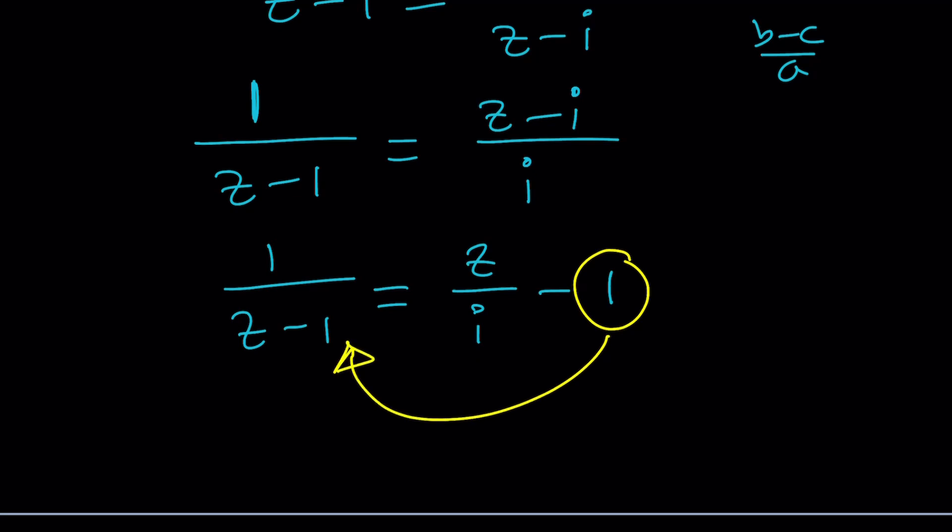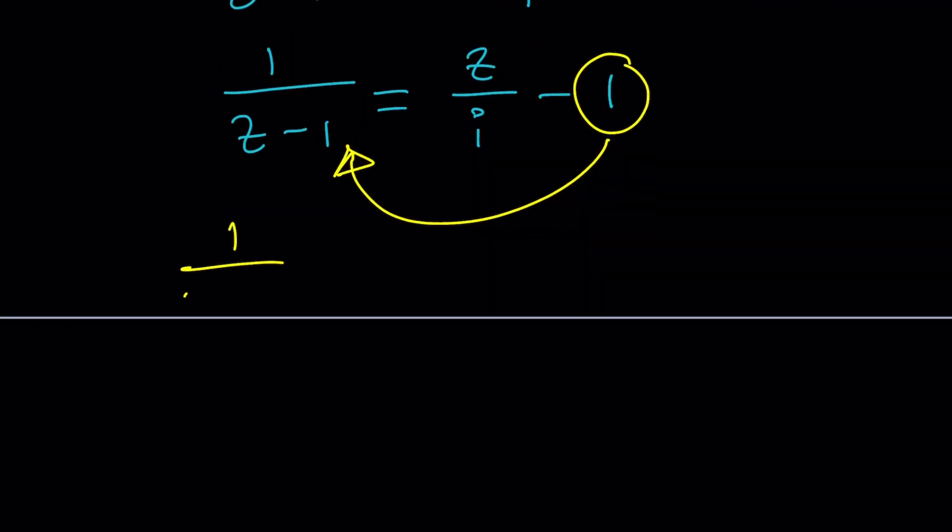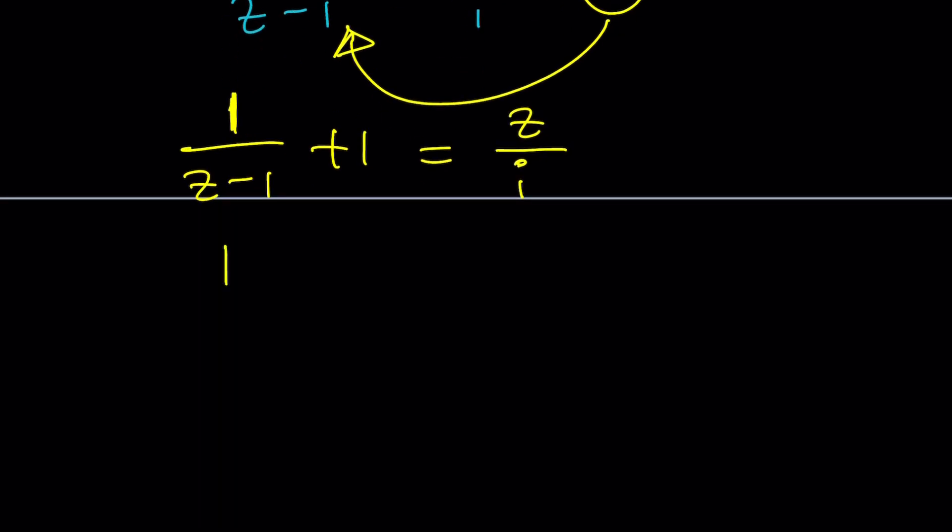I'm going to add one to both sides. So we're going to put this one on the left hand side because I have a z minus one. Take a look at that and see what it's going to do. It's just going to do miracles. When you add one, of course, you're basically making a common denominator. And ta-da!